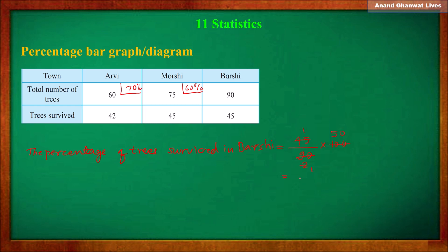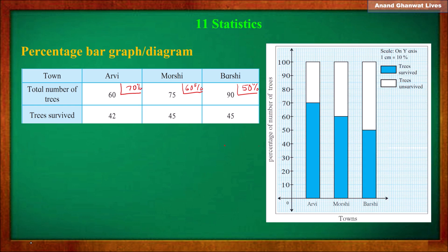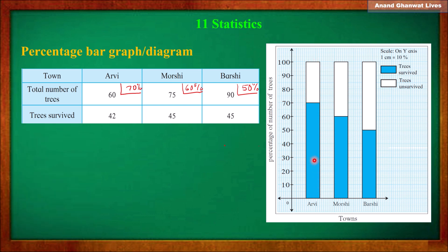Now, what is the difference between a subdivided bar diagram and a percentage bar diagram? We observe here that the total percentage of trees is 100, 100, and 100 — so we are comparing with 100. The total must be 100. So it is also a kind of subdivided bar graph, but its height must be equal to 100.